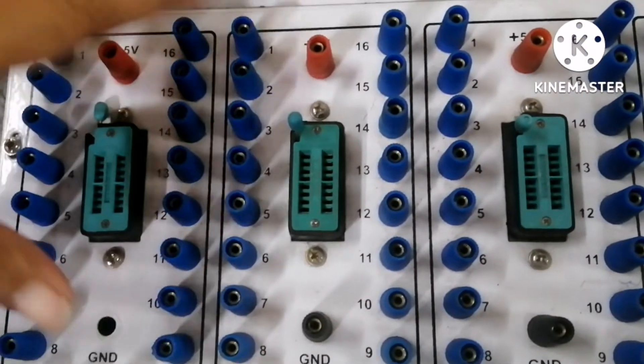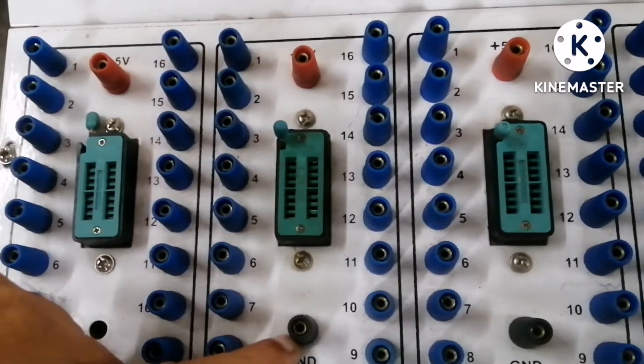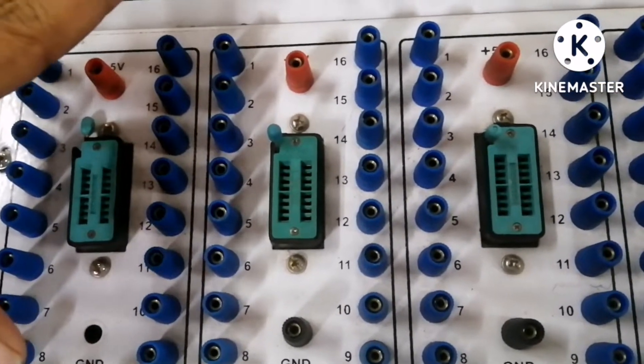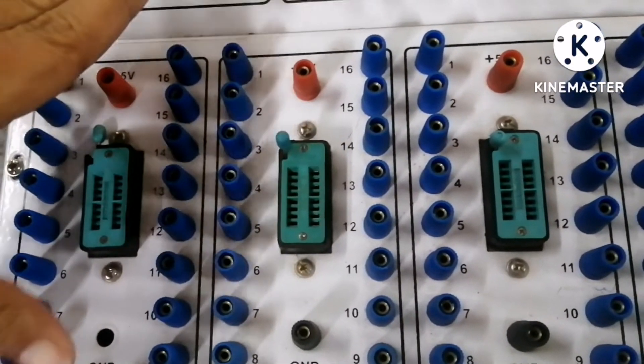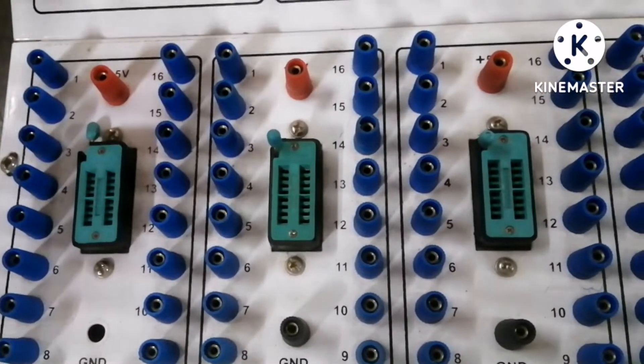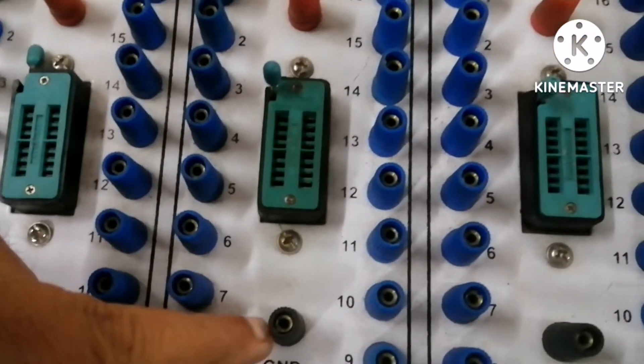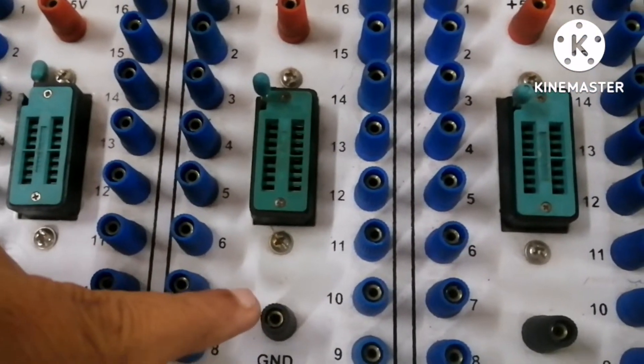We should not give the VCC and ground to the other pins. Otherwise, the IC will burn out. That is the precaution we should take. For the correct pin, we should give the VCC and ground. Without which, we cannot operate the experiments.